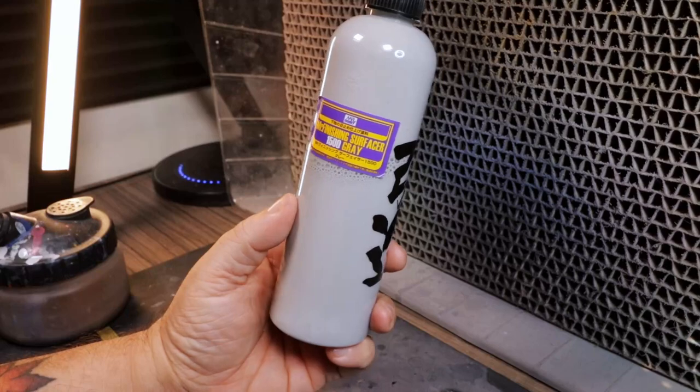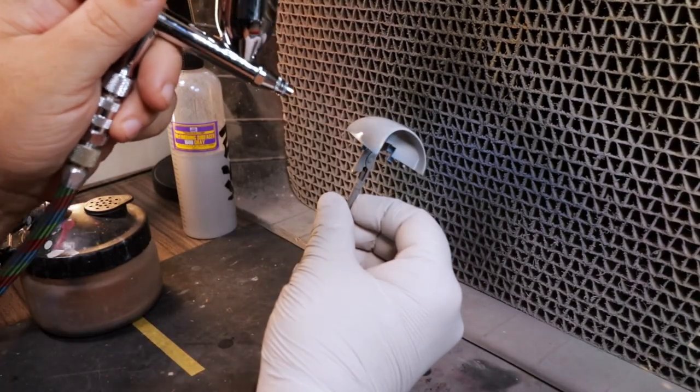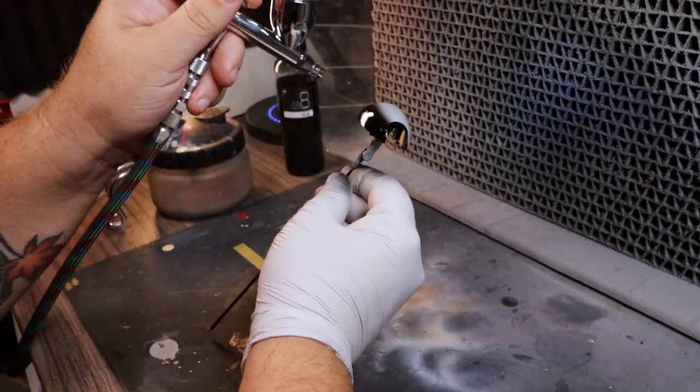Now that all of our pieces are ready to go, the first step is to prime the kit. In the past, I have used Alclad's Gloss Black Base in order to prime my kits, but I wanted something a little bit stronger and a little bit tougher because of how smooth the pieces are. Instead of using Mr. Hobby Surfacer 1500 Black, which I don't have, I went ahead and just used the gray and then applied a black glossy paint over that to get the same effect.